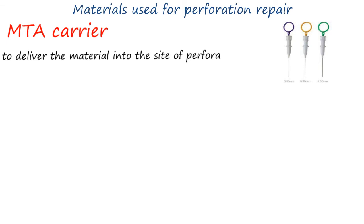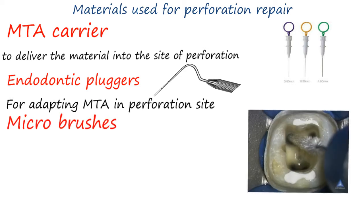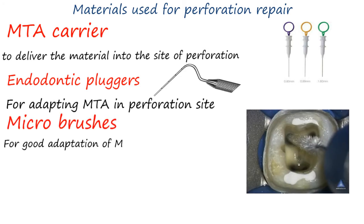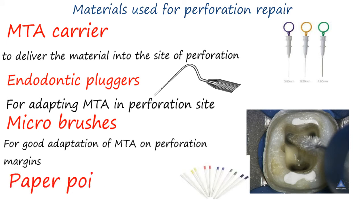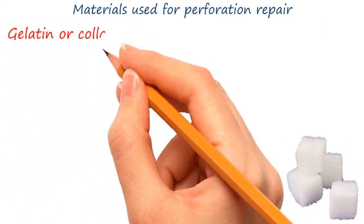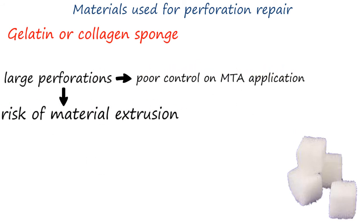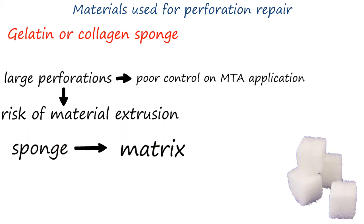There are many MTA carriers available. Endodontic pluggers are used for adapting MTA at the perforation site. Microbrushes are used for good adaptation of MTA on perforation margins. Paper points are used for MTA compaction and to absorb moisture. Gelatin or collagen sponge is used in cases of large perforations where there is poor control on MTA application and risk of material extrusion into the periodontal area — the sponge acts as a matrix against which MTA is compacted. It should be placed beyond the perforation margin to ensure adequate seal.